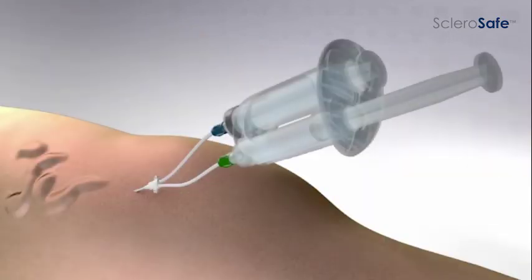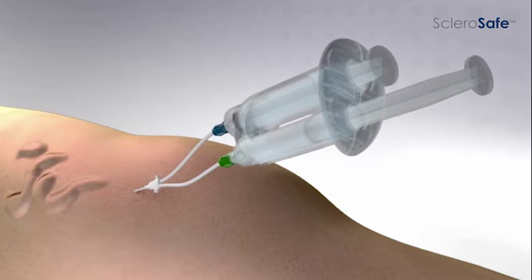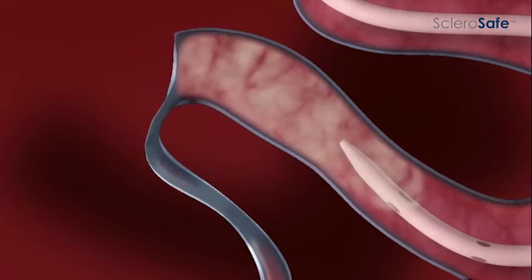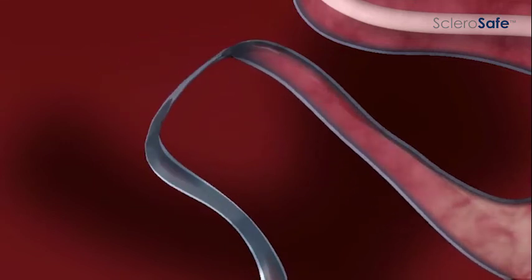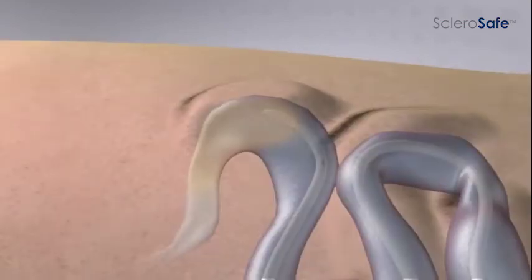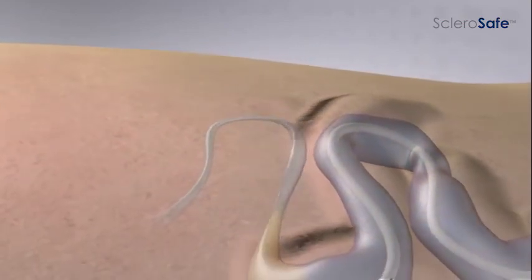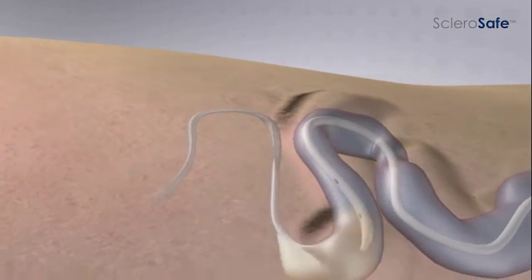At this point, the dual procedure syringe discharges the sclerosant agent from the distal end of the catheter through one syringe, while blood is withdrawn simultaneously through the second syringe. This single-hand dual injection and aspiration continues as the SclerosAfe catheter is slowly withdrawn to the level of the puncture site and removed from the body.